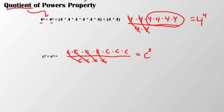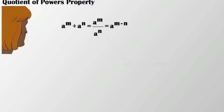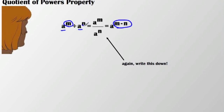So just like with the product of powers property, you might see a relationship between the exponents and your final number. The exponents are 7 and 4, giving 3. That leads to our quotient of powers property: whenever we have a to the m divided by a to the n — exponents with similar bases being divided — that's the same as setting them over each other in a fraction. The main idea is that you're subtracting the exponents. So a to the m divided by a to the n means keep the base the same and subtract the exponents.